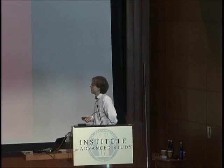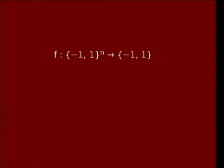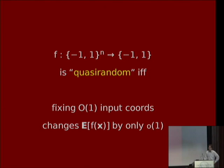I'm going to talk about Boolean functions in this talk and I'll start by introducing a notion of quasi-random Boolean functions. I like to write Boolean bits as minus one and one, so a Boolean function for us will be a function f mapping sequences of n bits into one bit. Here's the rough definition: we'll say that such a function is quasi-random if the following thing holds.